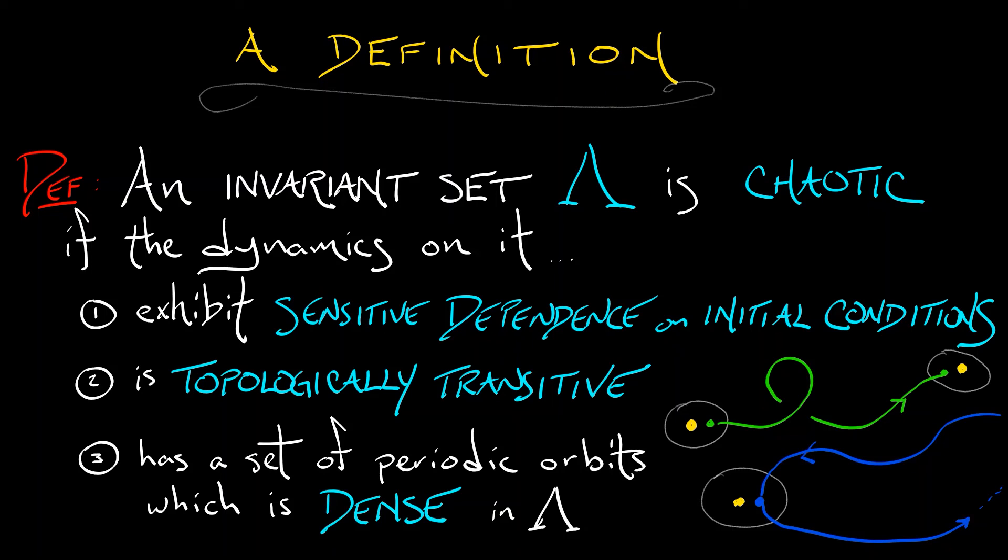That is our operational definition for a chaotic invariant set. Sensitive dependence, topologically transitive, dense periodic orbit set.